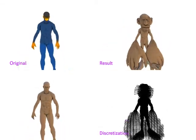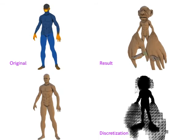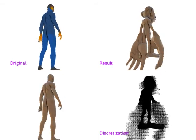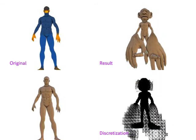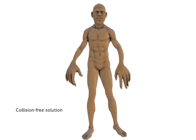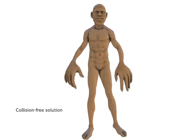Notice the self-intersections of the model after this step. The self-intersection-free solution is generated afterwards in an offline step.